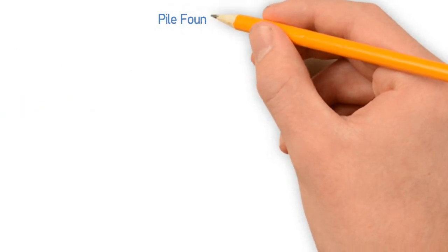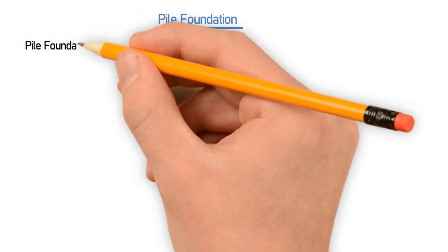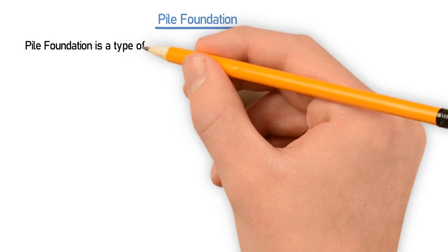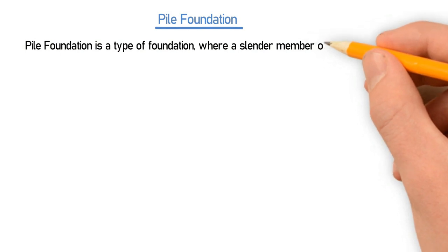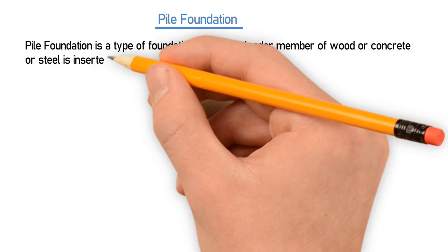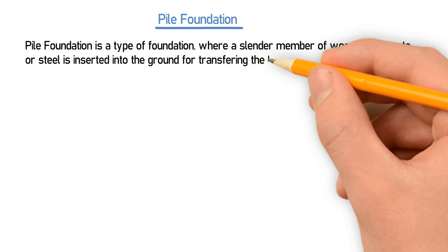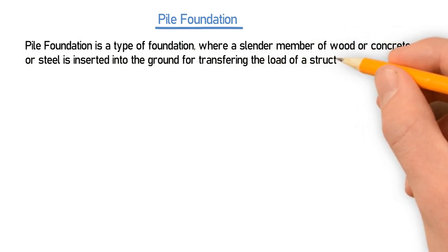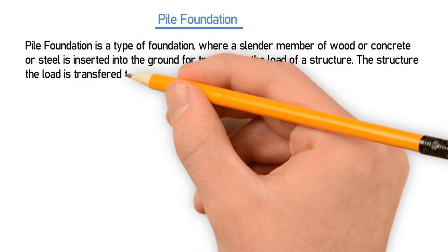Number one is pile foundation. Pile foundation is a type of deep foundation where a slender member of wood, concrete, or steel is inserted into the ground for transferring the load of a structure. The load is transferred to a stronger stratum by friction.